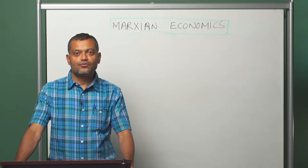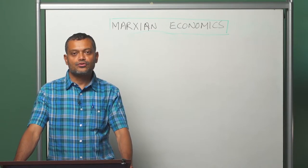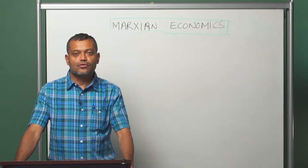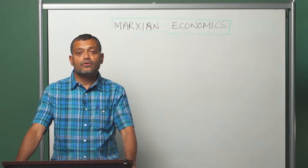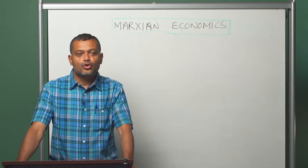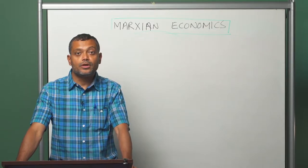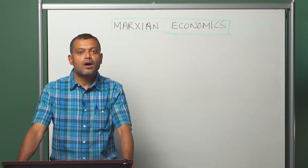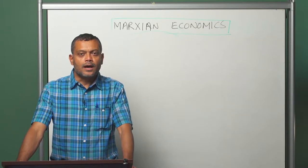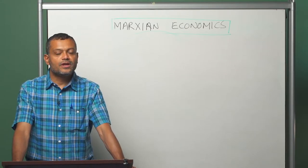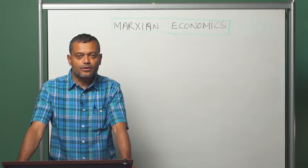Welcome back folks, this is Dipankar Basu from the Department of Economics at UMass Amherst and you are listening to the course Marxian Economics. Let me quickly remind you we have looked at three modules so far. The first module gave an overview of the whole class. In the second module we looked at some methodological issues and in the third module we started an analysis of political economy by looking at the argument laid out by Marx in volume 1 of Capital. The argument that we studied in the previous module helped us understand the processes related to the generation and accumulation of surplus value.